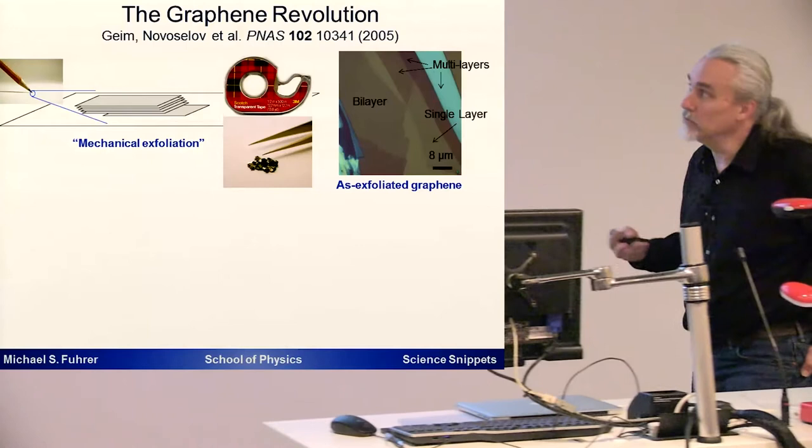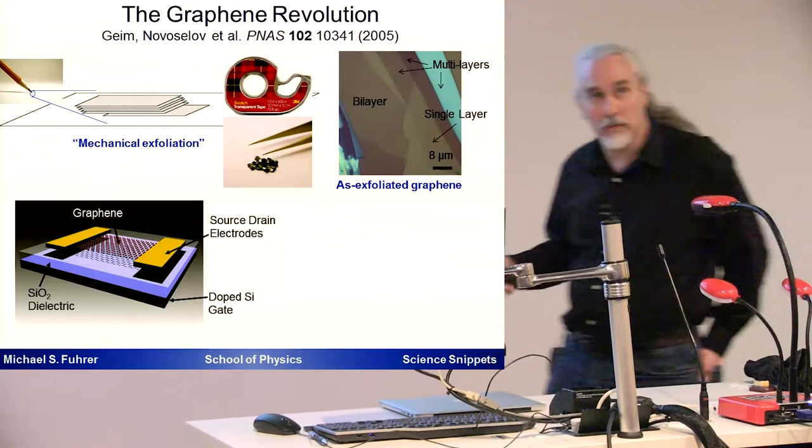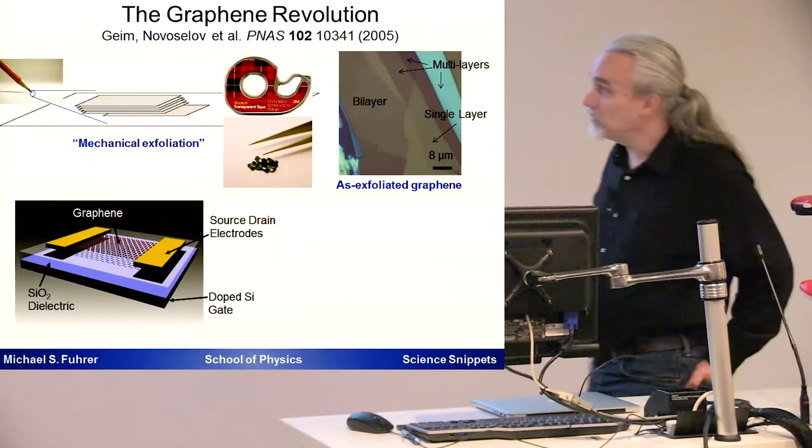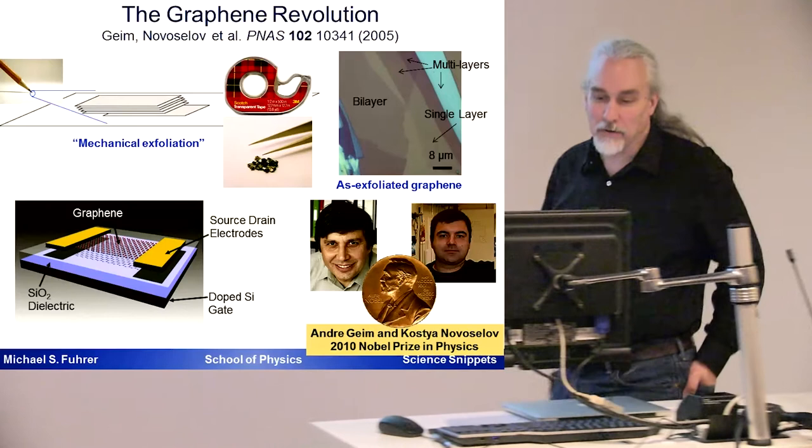This is bilayer, etc. We can actually find these single layers, and then we can use the tools that are used in the semiconductor industry to make micro devices—to make little graphene devices where we have metal electrodes contacting our graphene so we can run currents through it and do electrical experiments. Experiments on devices like this resulted in the Nobel Prize in physics in 2010 for Andre Geim and Kostya Novoselov, who developed this technique of using scotch tape to make graphene.